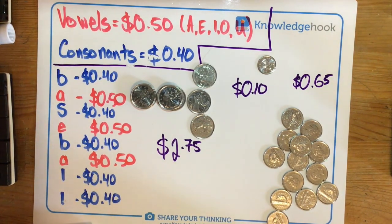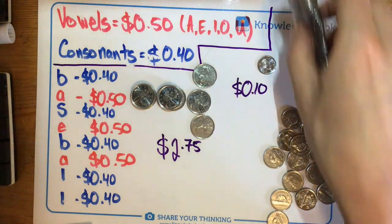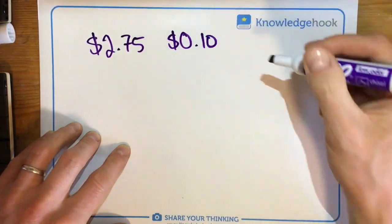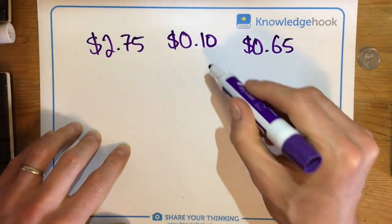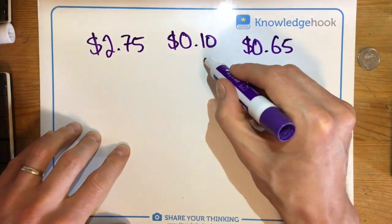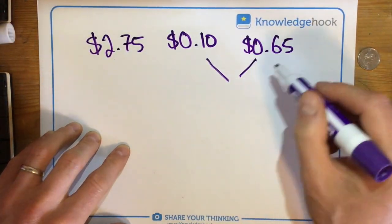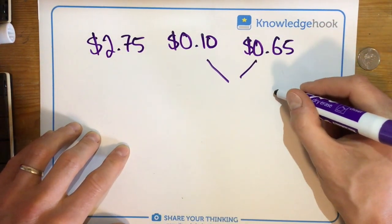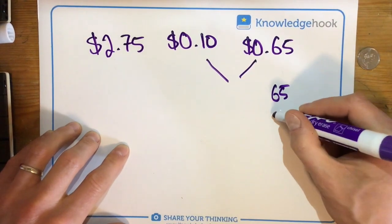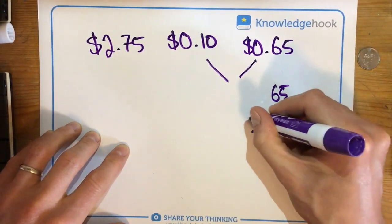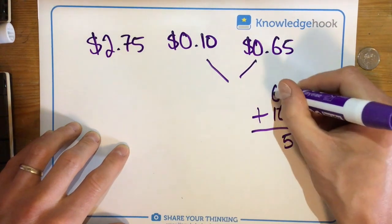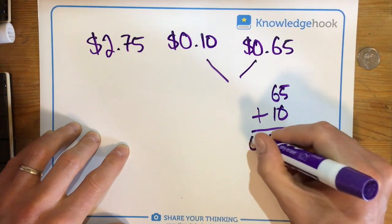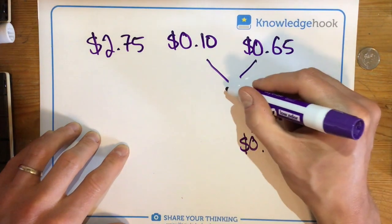Now that I have those values, I can add them together to figure out how much the word is worth. Let's start by combining these two because all we have to think is what's 65 and 10 more. If we want to add them together we can say 65 cents plus 10 more cents. Five plus zero is five, six plus one is seven, and we're still talking about 75 cents, so we'll make sure we're writing that properly.